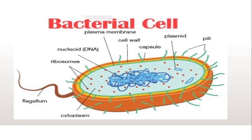To see the answer of the function of plasmid, before that we will see what is plasmid. As you can see here in the image, this plasmid is nothing but it is an extra chromosomal DNA. This is a nucleoid DNA and this is also a DNA but it is extra chromosomal — that means extra to chromosomal DNA — but it is inside the cell only and it is separated from chromosomal DNA.